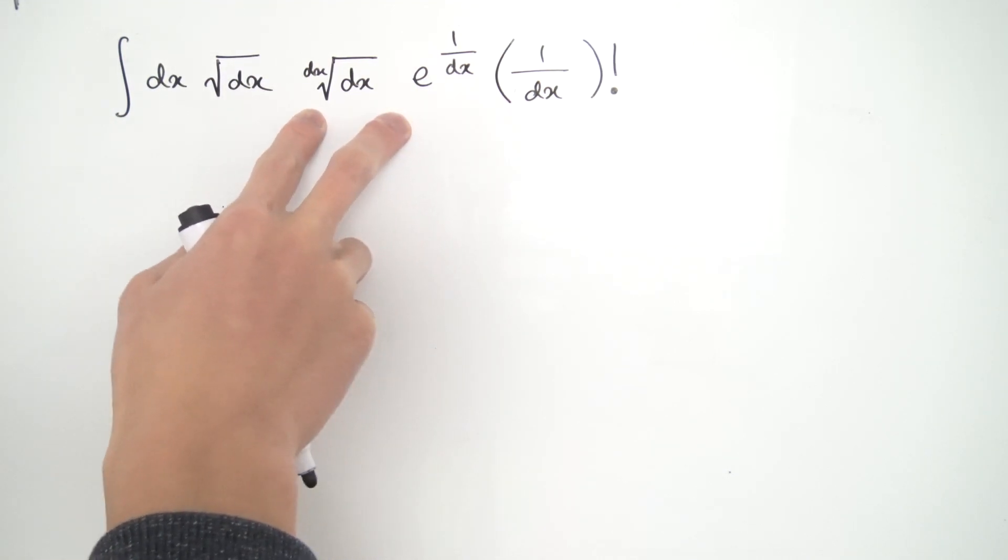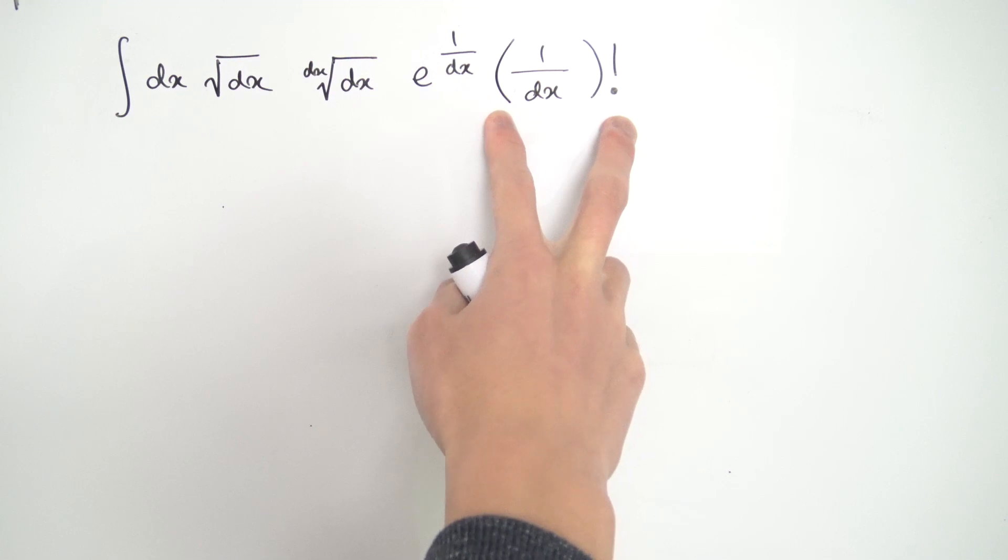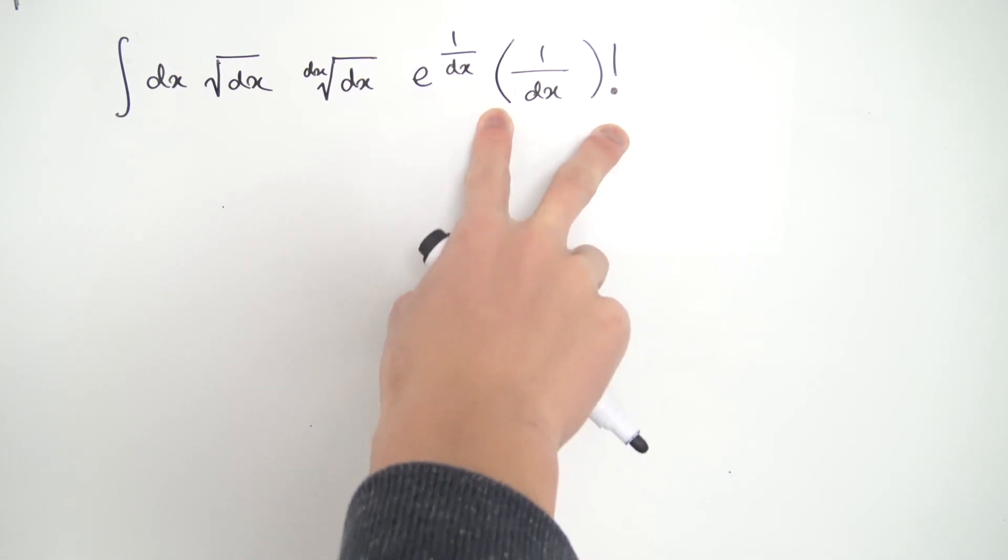And then we also have this dx root of dx to make matters worse, and because I'm bored I add on an extra e to the 1 over dx, and then we ended off with a 1 over dx, the whole thing factorial, whatever that happens to be.